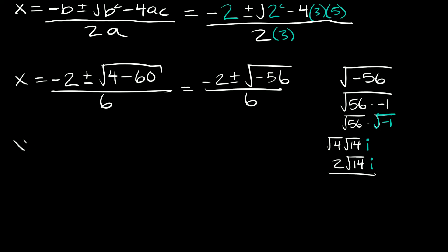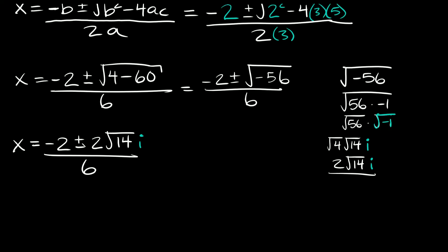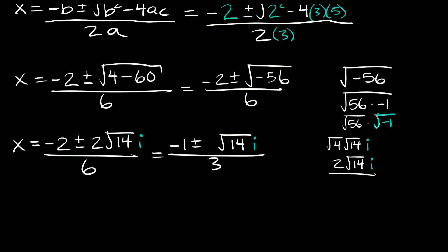So if we come back into our formula, we're going to get negative 2 plus or minus 2 root 14 times i, all over 6. As you can see, we have a couple of 2's — a 2 in the numerator and a 2 from the radical term — and a 6 in the denominator. So 2 over 6 reduces to 1 over 3. So we can rewrite this as negative 1 plus or minus 1 times the square root of 14 times i over 3. And 1 times the square root of 14 times i is just the square root of 14 times i, so we don't really need that 1.